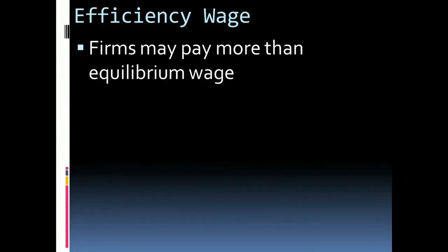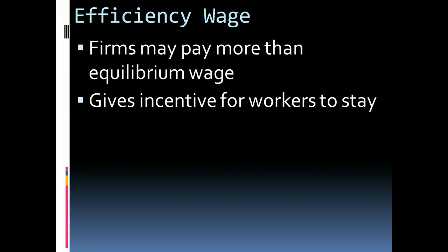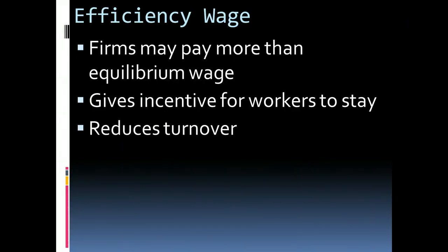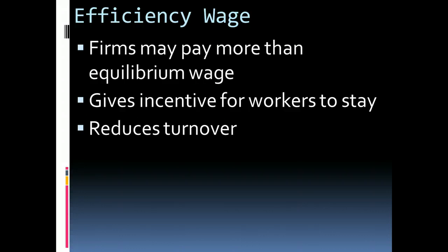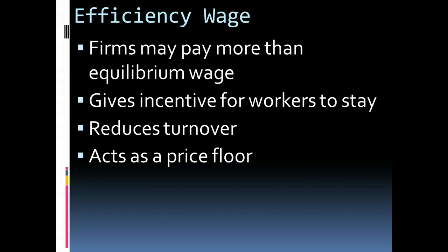Efficiency wages are another thing that causes wages to be higher, not because of productivity but for some other reason. There are times when firms may pay more than the equilibrium wage in order to give workers incentive to stay. It's expensive to hire and search for new workers, so some firms will pay a wage higher than what the market calls for in order to keep people in position. It helps reduce turnover but does mean higher costs. In essence, it's like a price floor — the wage won't go lower than this — and what happens is it creates a labor surplus, with more people looking to provide labor than there are jobs available.